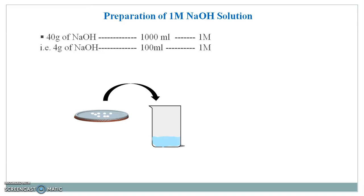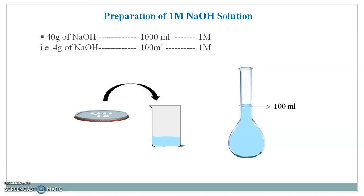Now, transfer the formed solution into a volumetric flask and make the volume up to 100 ml with carbon dioxide free water. This formed solution has a concentration of 1 molar — this is how you prepare a 1 molar sodium hydroxide solution.